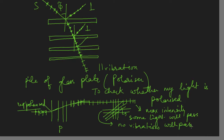What I am doing is rotating my pile of glass plates. This pile of glass plates, which was acting as a polarizer earlier, is now acting as an analyzer because it is helping me analyze whether my light is polarized or not. So the same material used to polarize light can also be used as an analyzer.